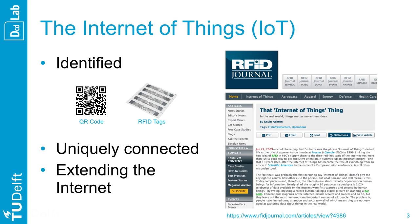To do so, there are three key elements. First, physical things are identified on the Internet via various technologies such as RFID tags that we can find in clothing, for instance, or QR codes.